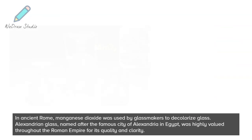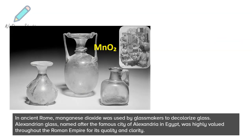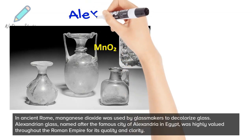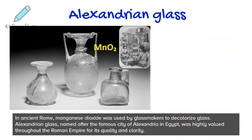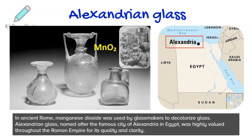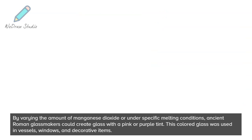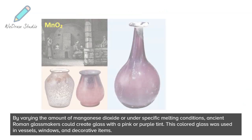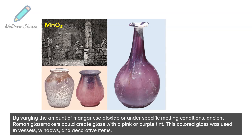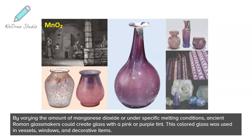In ancient Rome, manganese dioxide was used by glassmakers to decolorize glass. Alexandrian glass, named after the famous city of Alexandria in Egypt, was highly valued throughout the Roman Empire for its quality and clarity. By varying the amount of manganese dioxide or under specific melting conditions, ancient Roman glassmakers could create glass with a pink or purple tint. This colored glass was used in vessels, windows, and decorative items.